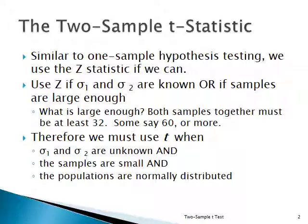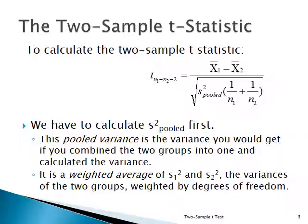The samples are kind of small, and the populations follow some kind of normal distribution, or at least aren't badly skewed. You see the formula for the two-sample t-statistic. Remember that s-squared pooled has to be computed first. It's essentially a weighted average of the two variances.